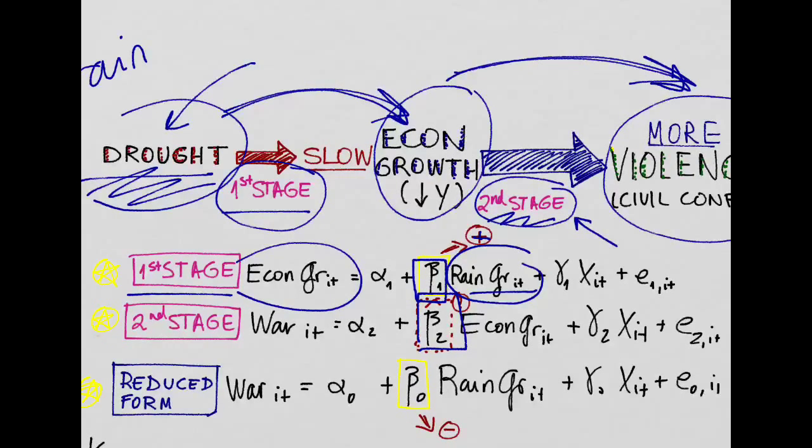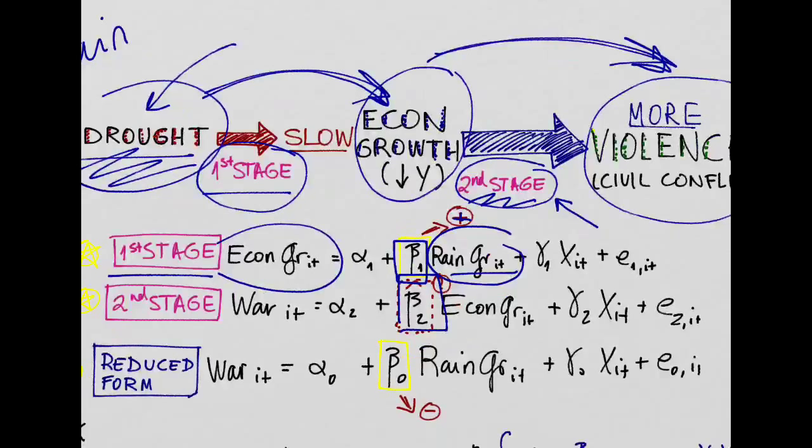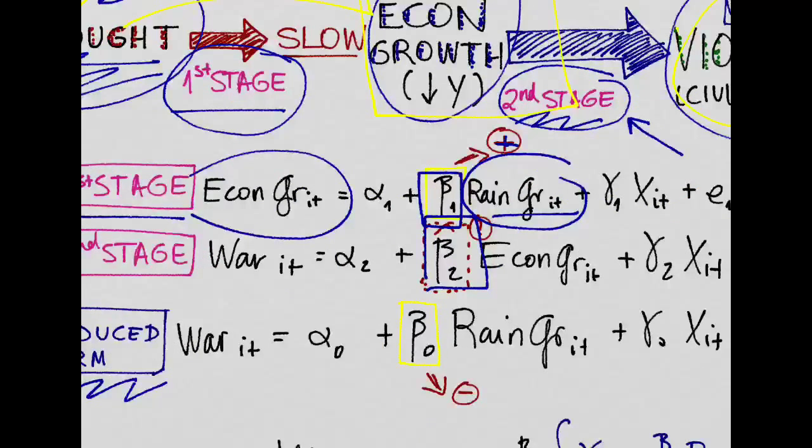To do this we run another regression which is called the reduced form regression, which is basically a regression that goes from drought to violence. And it's called reduced form because we assume that this impact of drought on violence is working through economic growth, even though we don't express it explicitly. And this will give us a coefficient which we call beta 0 that is most likely going to be negative. Bad rainfall years, years of drought, will lead to more wars.